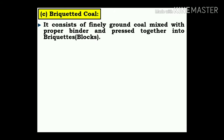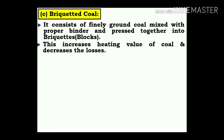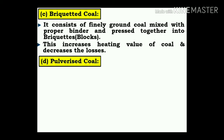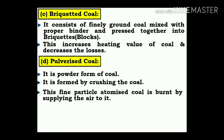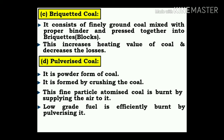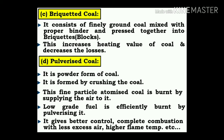Briquetted coal: it consists of finely ground coal mixed with the proper binder and processed together into blocks. This increases the heating value of coal and decreases losses. Pulverized coal: it is a powder form of coal formed by crushing. These fine atomized coal particles are burnt by supplying air. Low-grade fuel is efficiently burnt by pulverizing it, giving better control, complete combustion with less excess air, and higher flame temperature.